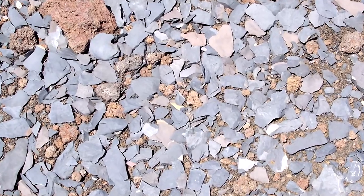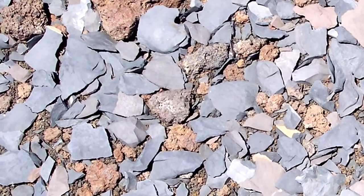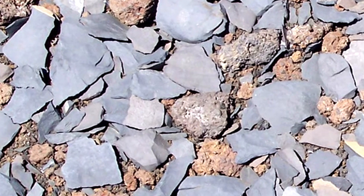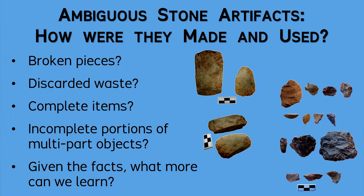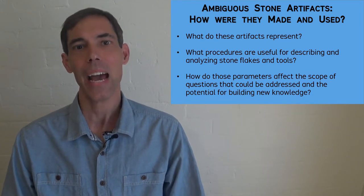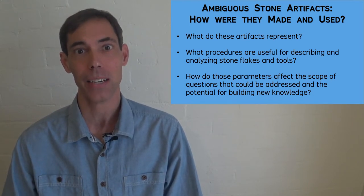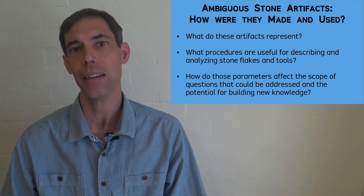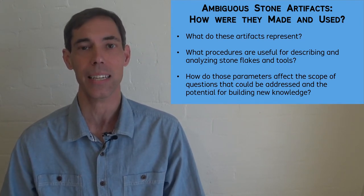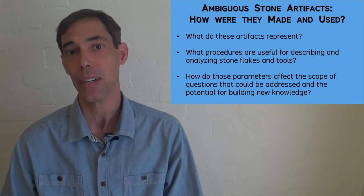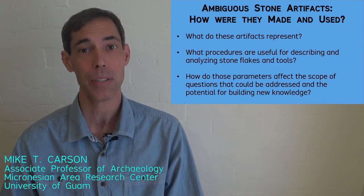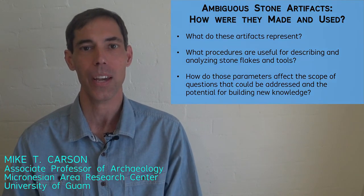As you have seen here, stone flakes and tools often are ambiguous at first, but you can use a number of approaches to clarify what these objects represent. Based on these clarifications, you can develop stronger, deeper interpretations and new research programs. Now you should be prepared to describe and interpret stone artifacts, assess the material evidence, and organize procedures for collecting information toward addressing significant research issues. I hope that you enjoyed this episode, and that you will explore more with the Archaeology Studio.